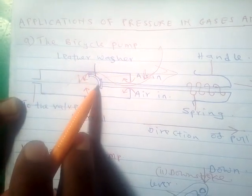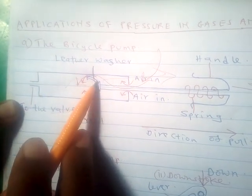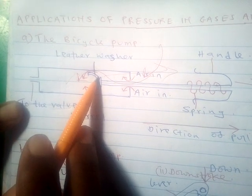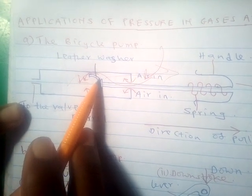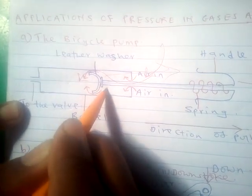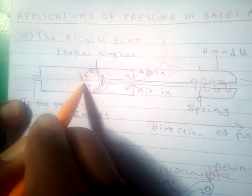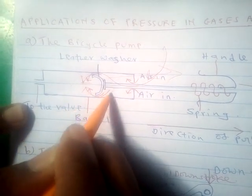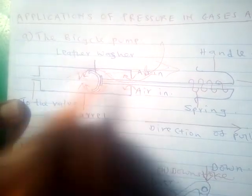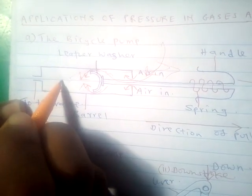In this case, the leather washer acts as a valve. The air is pushed through these ends into the barrel.